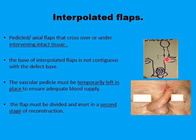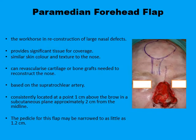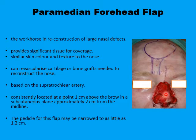The base of the flap remains temporarily attached to the defect for a few weeks until it receives its new blood supply from the recipient area, and then in a second stage it can be released and the donor area reconstructed. The paramedian forehead flap is a good example of interpolated flaps — it is considered the workhorse for reconstruction of major nasal defects because it provides a significant amount of skin and tissue for replacement of the nasal defect.